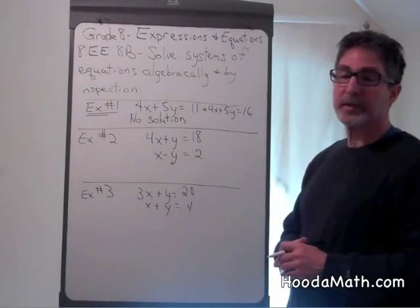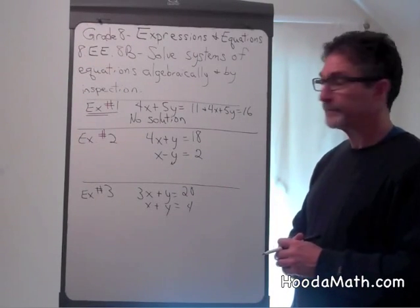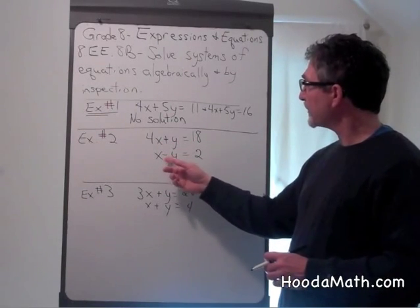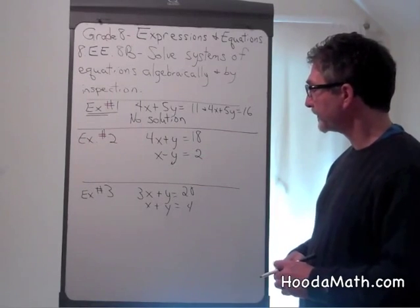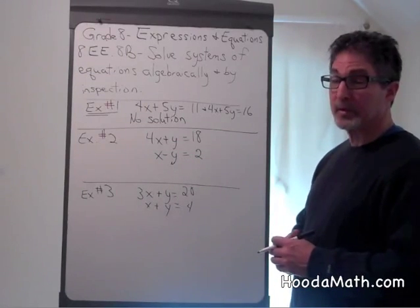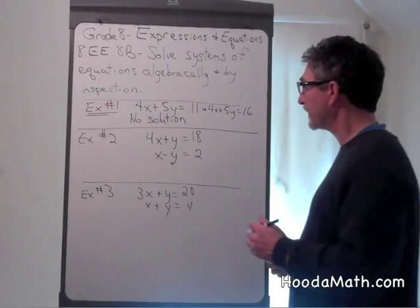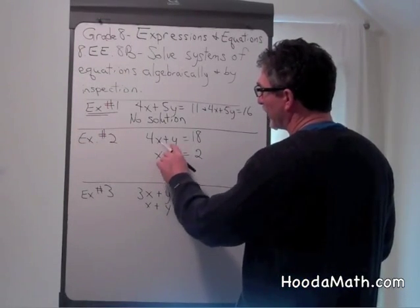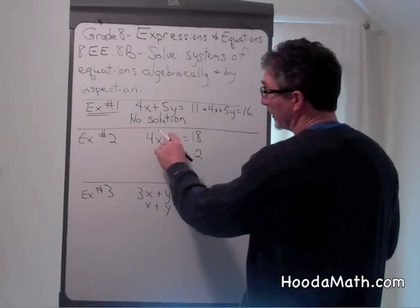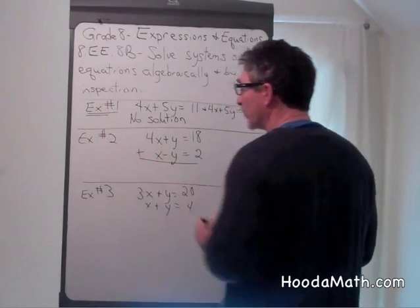Example two, we're going to use elimination to solve for the values of x and y. 4x plus y equals 18 and x minus y equals 2. Now we could do this graphically, but this is a very simple way, by using elimination, to solve for x and y. So because the coefficient of y in both of these are opposites, this means positive 1 and this means negative 1, we can add together the two equations.